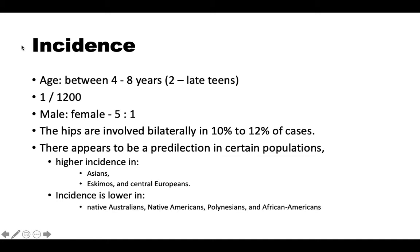Regarding age, Perthes disease is most commonly seen between four to eight years, but has been observed from age two up to the late teens. Incidence is approximately 1 in 1,200. Males are particularly more susceptible, at a ratio of five to one. Both hips are involved in 10 to 12 percent of cases. There appears to be a predilection in certain populations: higher incidence in Asians, Eskimos, and Central Europeans, and lower incidence in Native Australians, Native Americans, African Americans, and Polynesians.